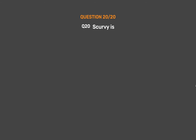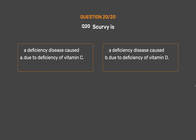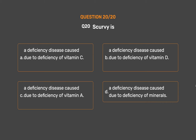Question number 20. Scurvy is: Option A - A deficiency disease caused due to deficiency of vitamin C. Option B - A deficiency disease caused due to deficiency of vitamin D. Option C - A deficiency disease caused due to deficiency of vitamin A. Option D - A deficiency disease caused due to deficiency of minerals.